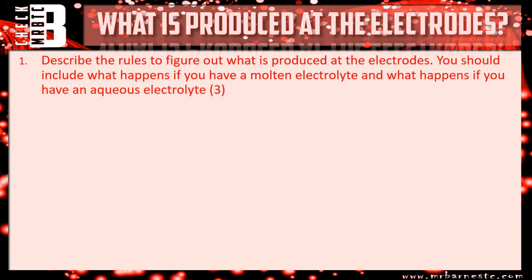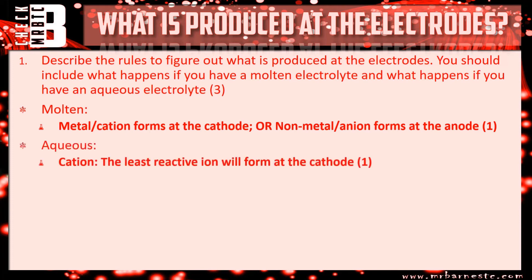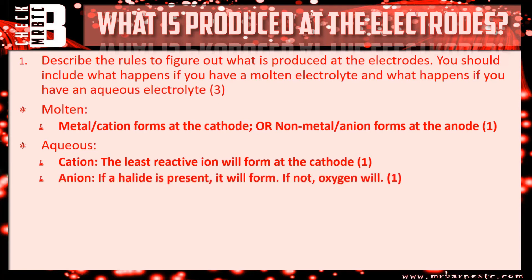Okay, let's see how you've done. Question one - the rules: if you have something that's molten, you're going to get just the ions present, so the metal or cation forms at the cathode and the non-metal or anion forms at the anode. For aqueous, the least reactive cation will form at the cathode. For the anion, if it's a halide that will always form first at the anode; if not, you'll get oxygen.